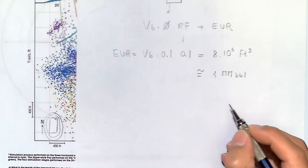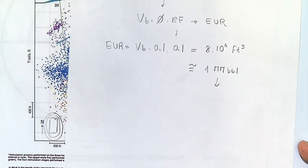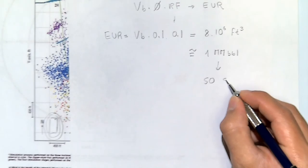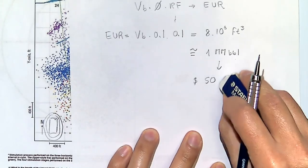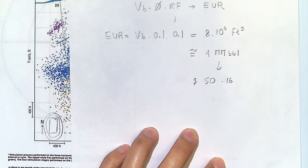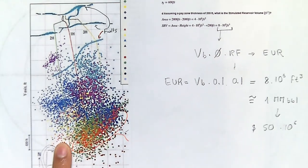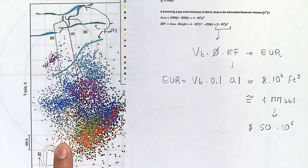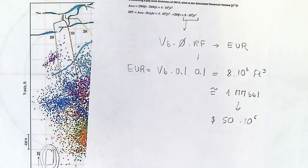Going further: at $50 per barrel, one million barrels gives you $50 million in revenue. Each well and completion costs about $10 million. With three wells you spend $30 million, you get $50 million in revenue, so you make about $20 million. That kind of makes sense economically.